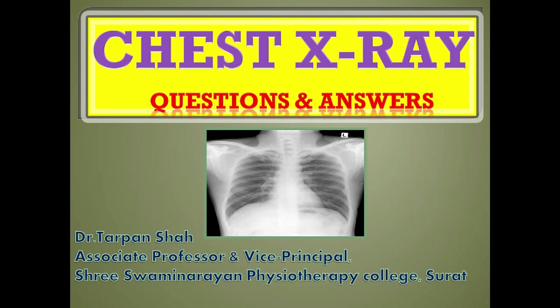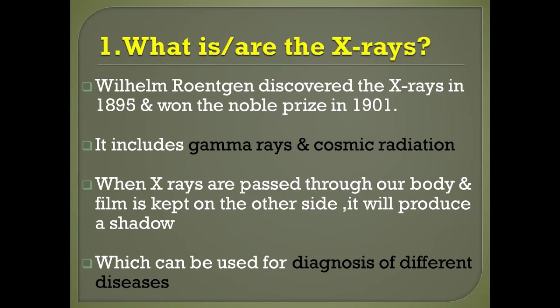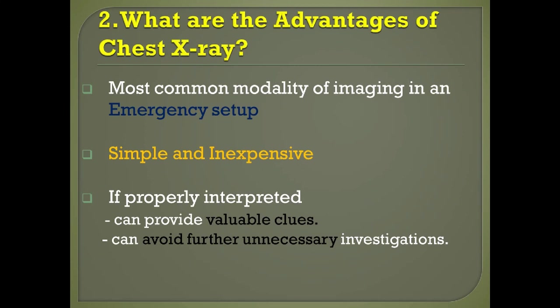Hello everyone. In this video I am going to discuss chest X-rays in a question and answer format. Question number one: what are X-rays? William Röntgen discovered X-rays in the year 1895 and won the Nobel Prize for the same in 1901. X-rays include gamma rays and cosmic radiation. When X-rays are passed through our body and a film is kept on the other side, it produces a shadow which can be used for the diagnosis of different diseases.